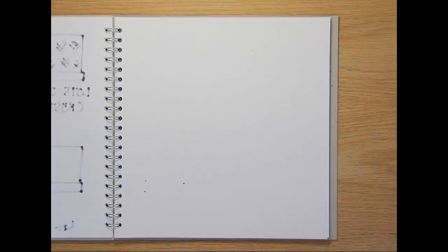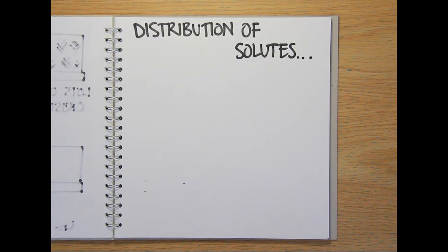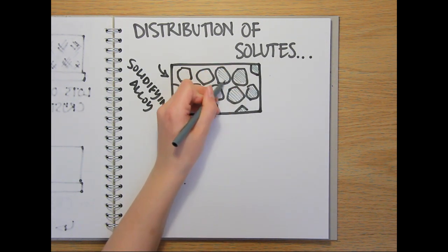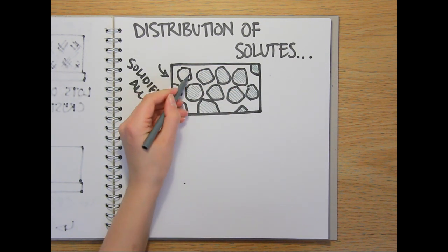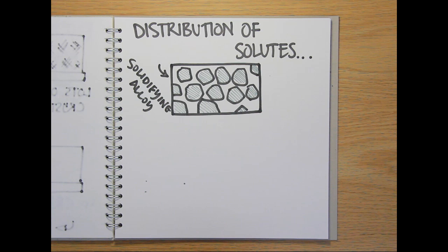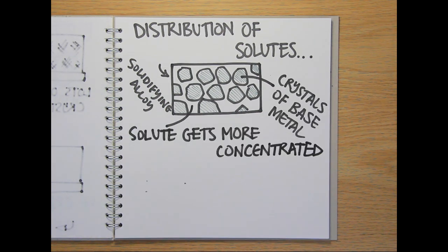Another property of alloys that can also be good or bad is the uneven distribution of the additional elements throughout the base metal. As an alloy solidifies, the additional elements, the solutes, become less soluble in the base metal. So, you end up with crystals of base metal suspended in an increasingly concentrated solute liquid.